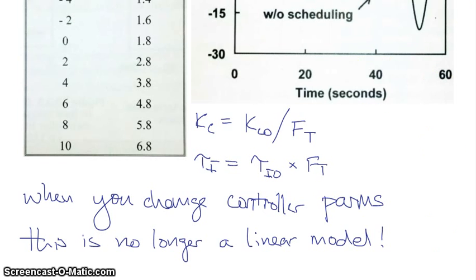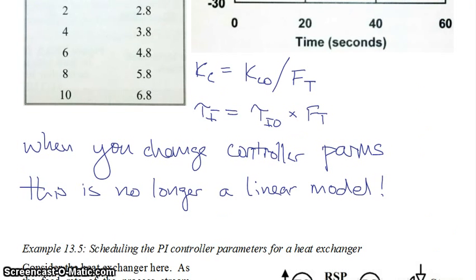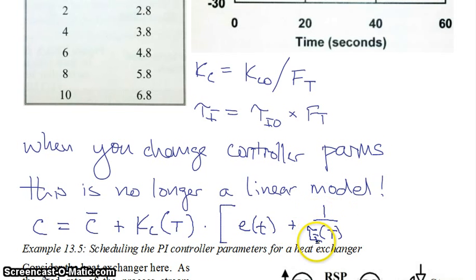So your controller algorithm now essentially becomes your controller signal being equal to some C bar times Kc, which is now a function of T instead of just being a constant, times E of T plus 1 over tau I, which is now a function of temperature, times the integral of E dt, etc.